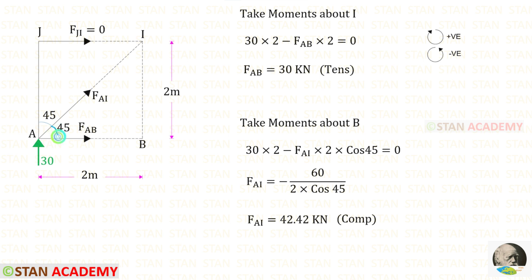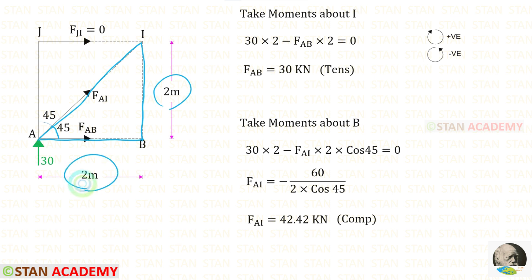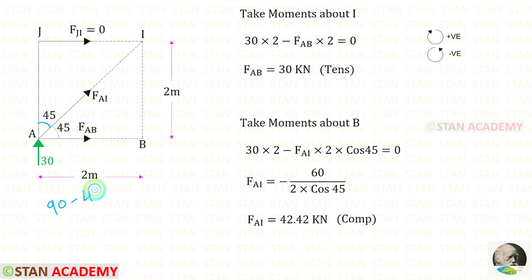We need to find this angle. Taking this triangle, the opposite side is 2 and the adjacent side is also 2, so the angle is 45 degrees. We can also calculate the complementary angle: 90 minus 45 equals 45.